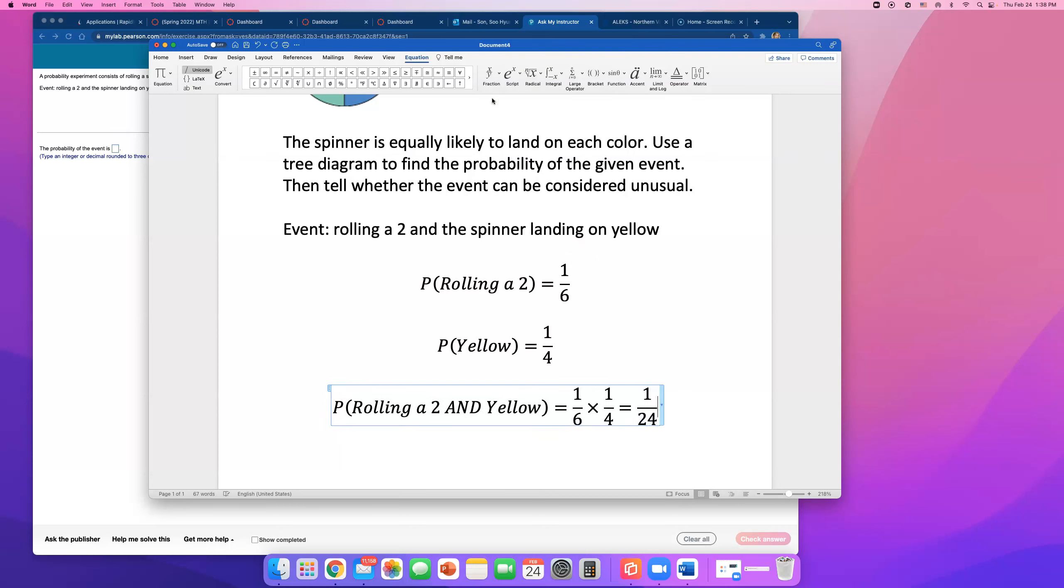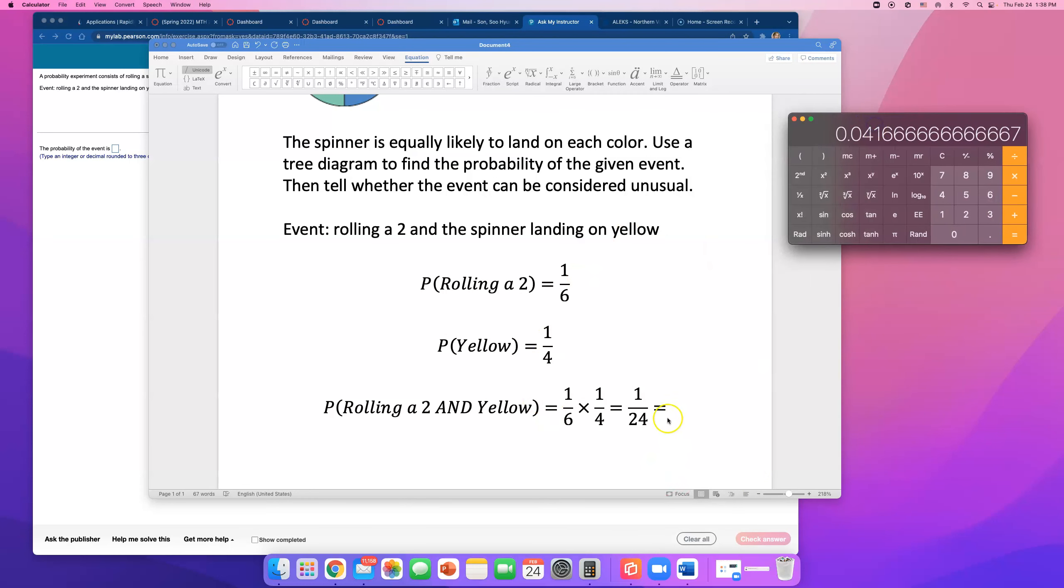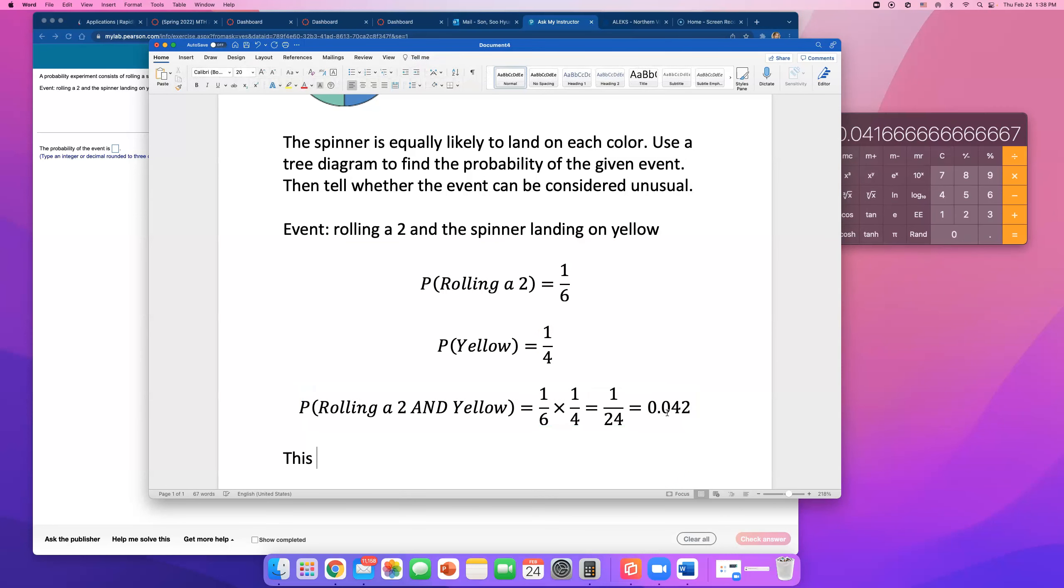That fraction comes out to be 1 out of 24. So that is the answer, but they want decimal, so I'm going to get a calculator and divide: 1 divided by 24 equals that decimal, 0.042 rounded up.